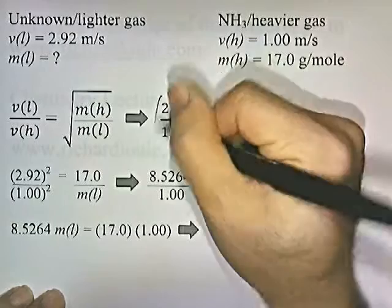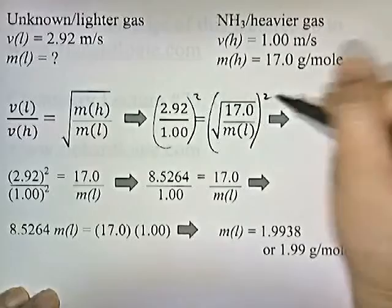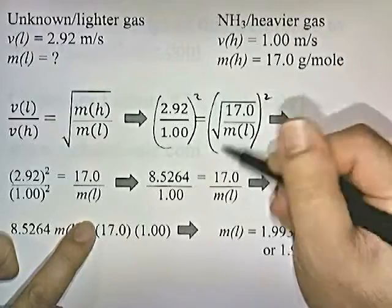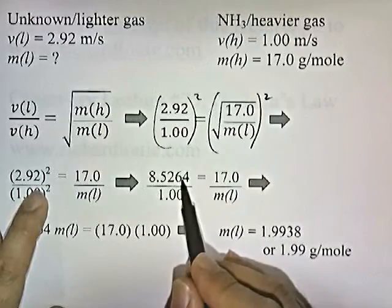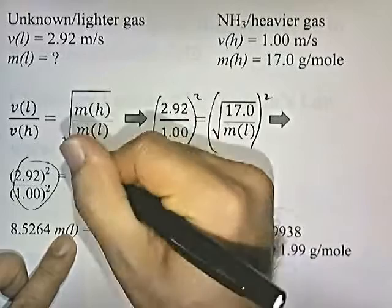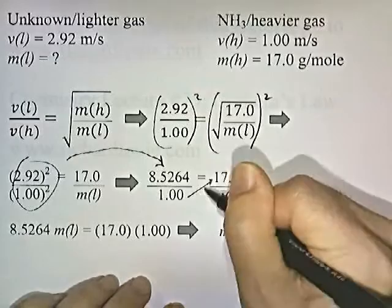So, what we do is we square both sides to get rid of the square root thing. So, the square root of something squared is just equal to itself. So, when you square something that's being square rooted, you just end up with what you started with. And then, 2.92 squared is 8.5264. 1 squared is the same as 1. So, all this equals this. And then, we cross multiply again.